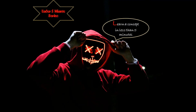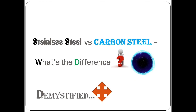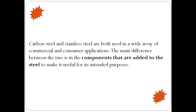Welcome to another video of 'Under Five Minutes,' where we try to learn a concept in less than five minutes. Today's concept is stainless steel versus carbon steel — what is the difference. Both carbon steel and stainless steel are used in a wide array of commercial as well as consumer applications. The main difference lies in the alloying elements added to steel, which tailor the properties we want.